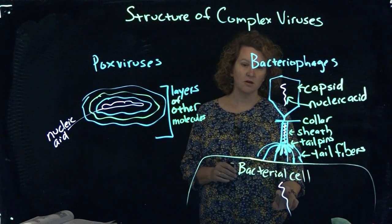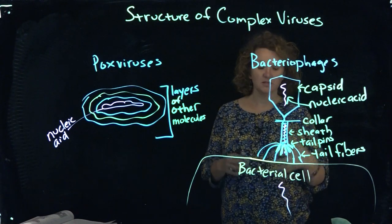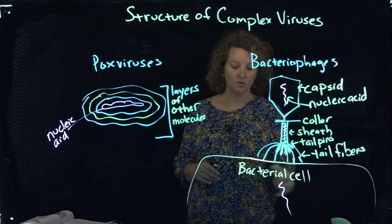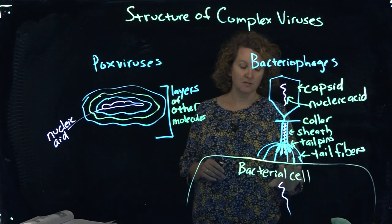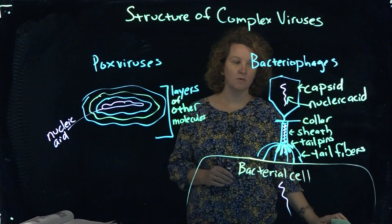So just that nucleic acid information will be enough then to make more copies. The problem with this, or maybe is a problem, is that in order to get out, because there isn't an easy mechanism to get in or out, you have to come out through lysis. So I'll talk about that a little bit more in another video.